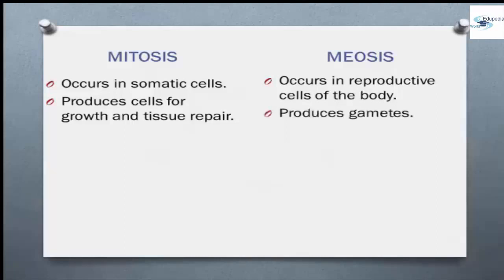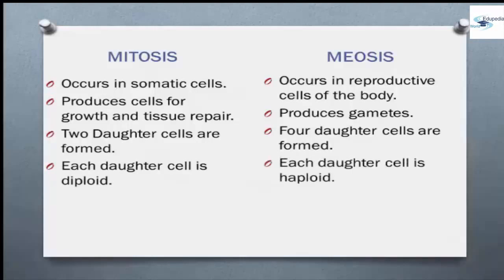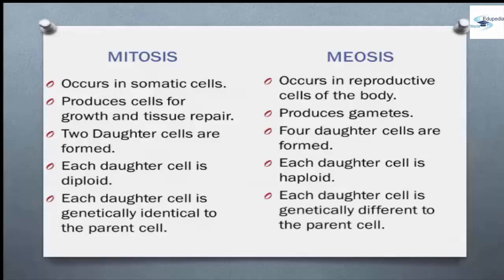Meiosis produces four daughter cells, whereas two daughter cells are formed in mitosis. Each daughter cell is diploid in mitosis, but in meiosis each daughter cell is haploid. In case of mitosis, each daughter cell is genetically identical to the parent cell, but in meiosis each daughter cell is genetically different from the parent cell.